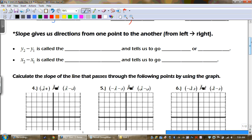Now, slopes give us direction from one point to another point, and that's always from left to right. The y2 and the y1, that's the top part, that is our vertical change. That tells us to go up or down. If it's positive, we rise. Or if it's negative, we fall.